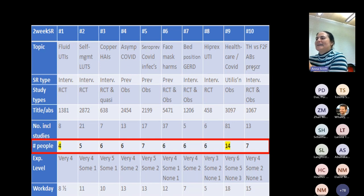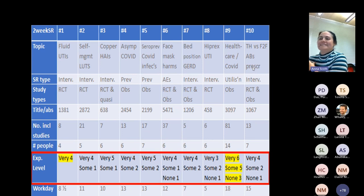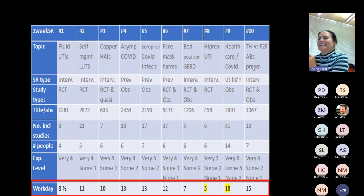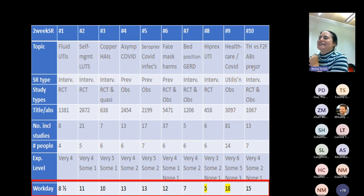Screening loads varied from 458 to just under 5,500. Number of included studies ranged from five — a tiny systematic review — to 81 observational studies, which is quite sizable. Teams were generally about six, but the 81-included-study review had a team of 14. Initially we restricted to very experienced folks but gradually moved to include people with some experience and even people with no experience at all, because the idea was to upskill them. How long did it take? You can do a systematic review in one week if it's tiny — six included RCTs. The big 81-included-study review took 18 work days, just under four weeks.